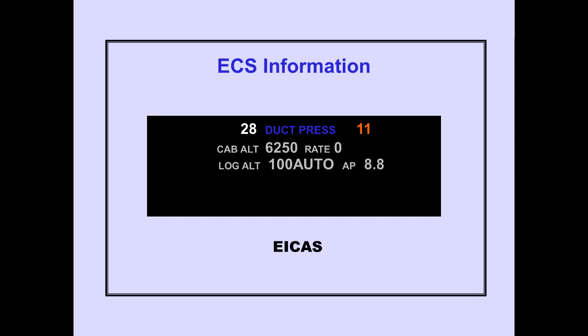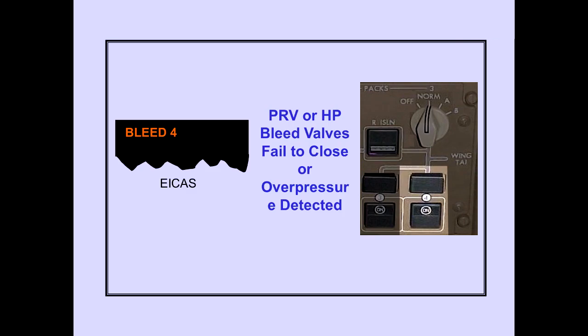If duct pressure falls to 11 psi or less, the ECS information appears on primary ICAS with the low duct pressure displayed in amber. The ICAS advisory message 'bleed' is displayed when the PRV or HP bleed valve fails to close when commanded, or when over pressure is detected. The system fault light also illuminates.